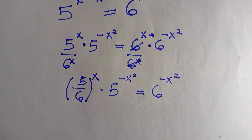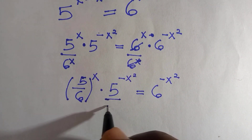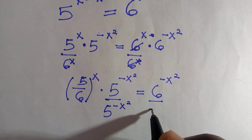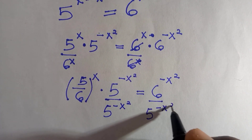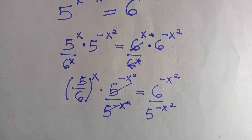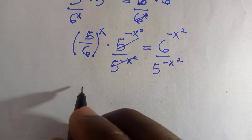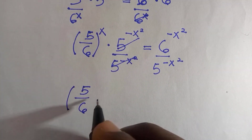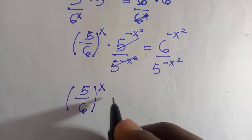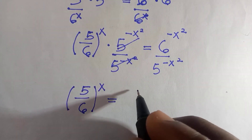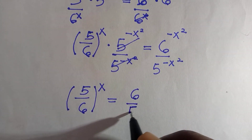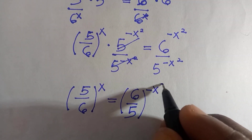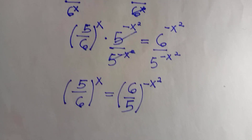What we did for the first one, we apply here by dividing both sides by five raised to the power of negative x squared. The two sides simplify, and we are going to have five divided by six, all raised to the power of x, equals six divided by five, all raised to the power of negative x squared.